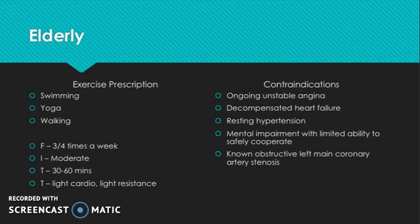For elderly people, I'd recommend three to four times a week of exercise. Working at a moderate intensity — though it depends on the individual, as some are more active than others and some have physical disabilities preventing them from working as hard, so they might work at a lighter intensity. Time: 30 to 60 minutes, with 30 being a minimum. The type is light cardio and light resistance work — you don't want to put too much stress on bones and muscles in case you cause an injury.